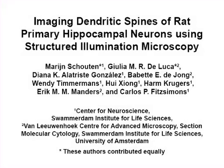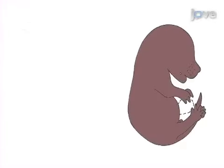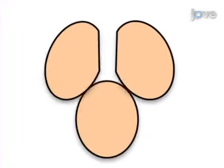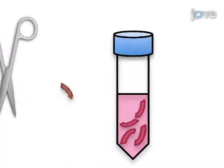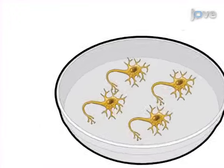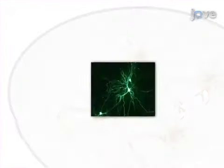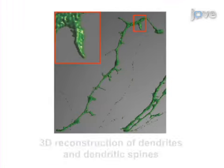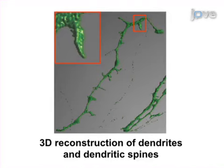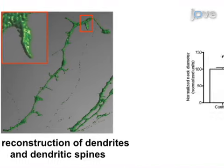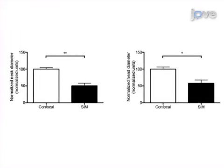The overall goal of this procedure is to image dendritic spines in super resolution. This is accomplished by first preparing a rat primary hippocampal culture. The second step is to visualize the dendritic spines by means of GFP transfection and staining. Next, the acquisition of GFP-labeled dendritic spines is carried out in super resolution using a SIM microscope. The final step is to reconstruct the raw image data into 3D, ready for subsequent image analysis.